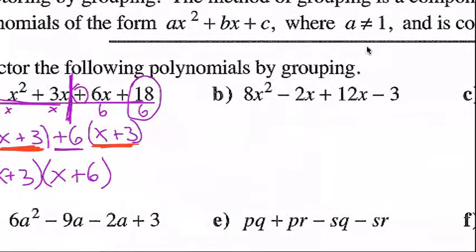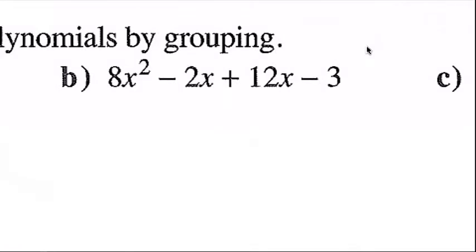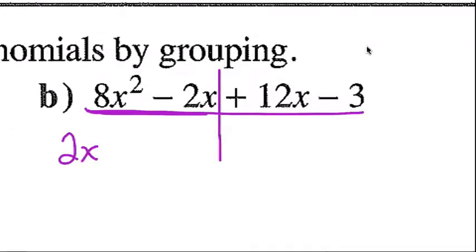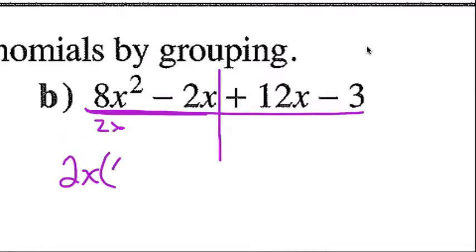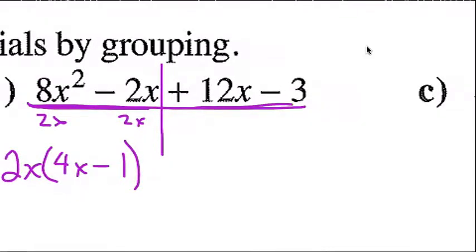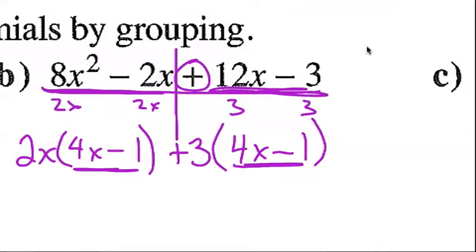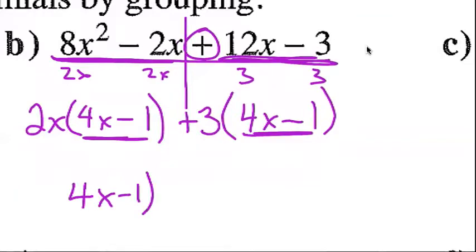Question b: 8x² − 2x + 12x − 3. Factor by grouping — draw my T, make my two groups. GCF of 8x² and 2x is 2x. Dividing: 8x² ÷ 2x = 4x, 2x ÷ 2x = 1, giving 2x(4x − 1). For the second group, GCF of 12x and 3 is 3: 12x ÷ 3 = 4x, 3 ÷ 3 = 1, giving +3(4x − 1). Double check: both binomials are (4x − 1). Factors: (4x − 1)(2x + 3).